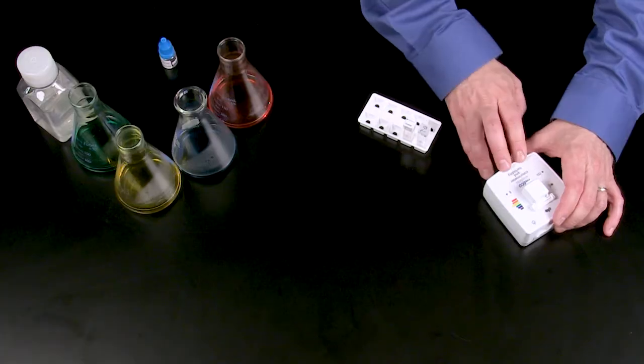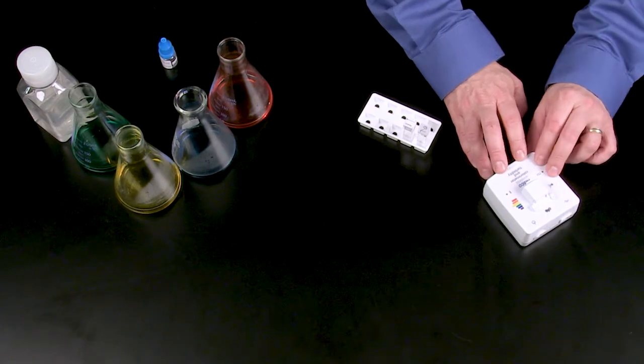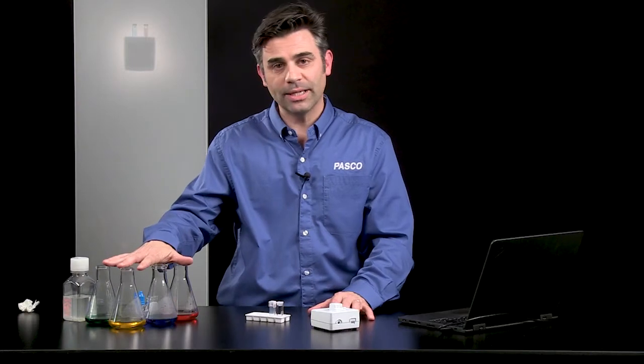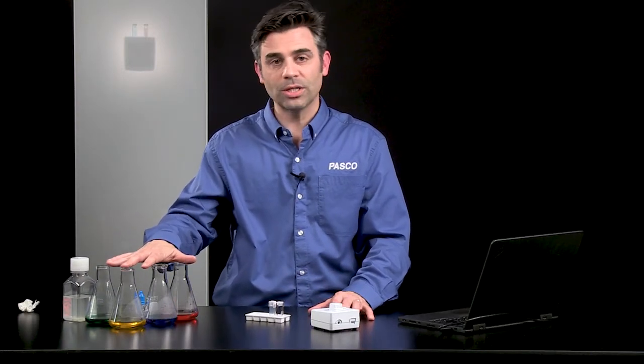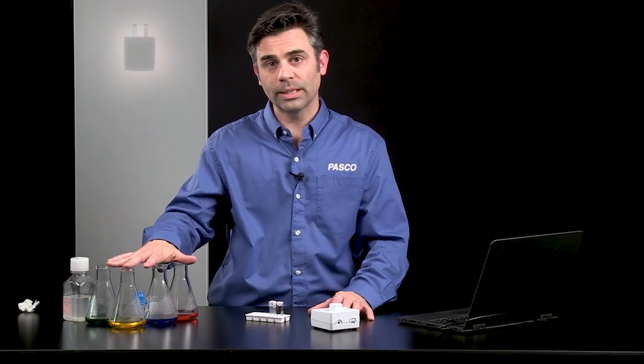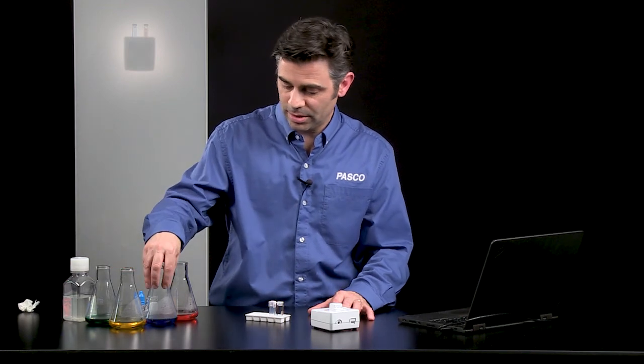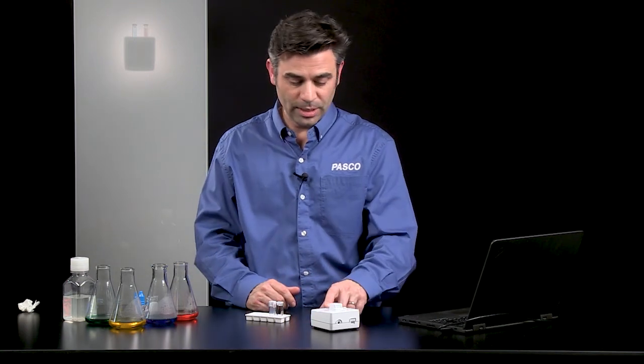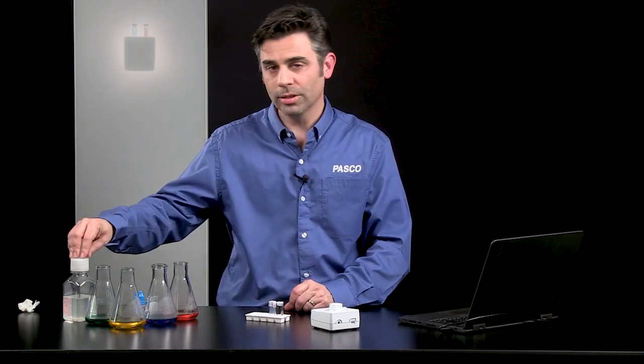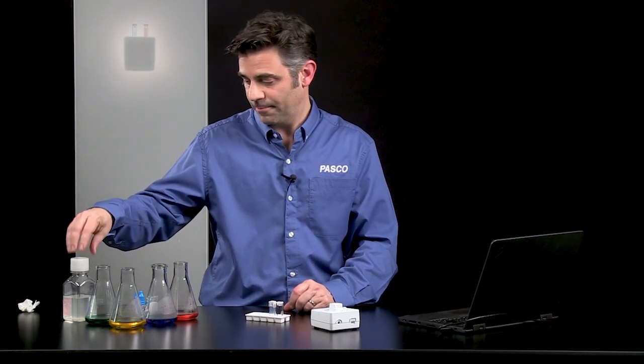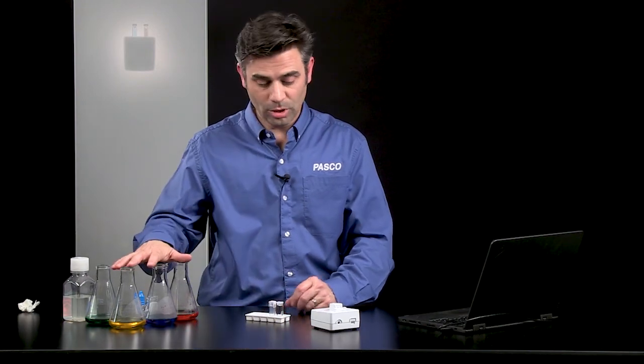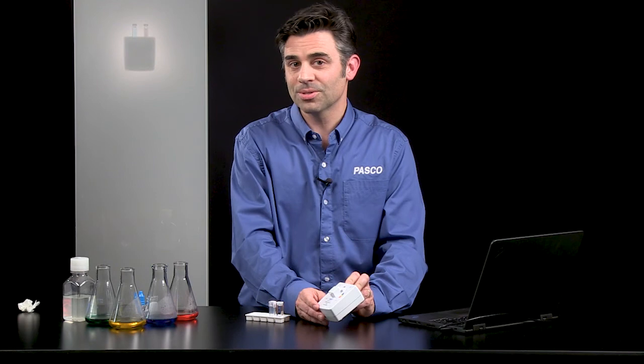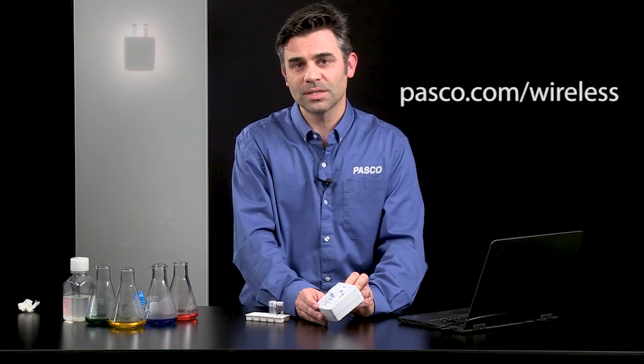And so this wireless colorimeter and turbidity sensor is great for looking at colored solutions. Applications include looking at concentration and color, and then also looking at reaction kinetics. So we can see dyes fading or reactants change in color over time. And the turbidity measurements are great for looking at the quality of water in terms of turbidity. So if you want to learn more about this sensor and any of our other wireless sensors, go to pasco.com/wireless.